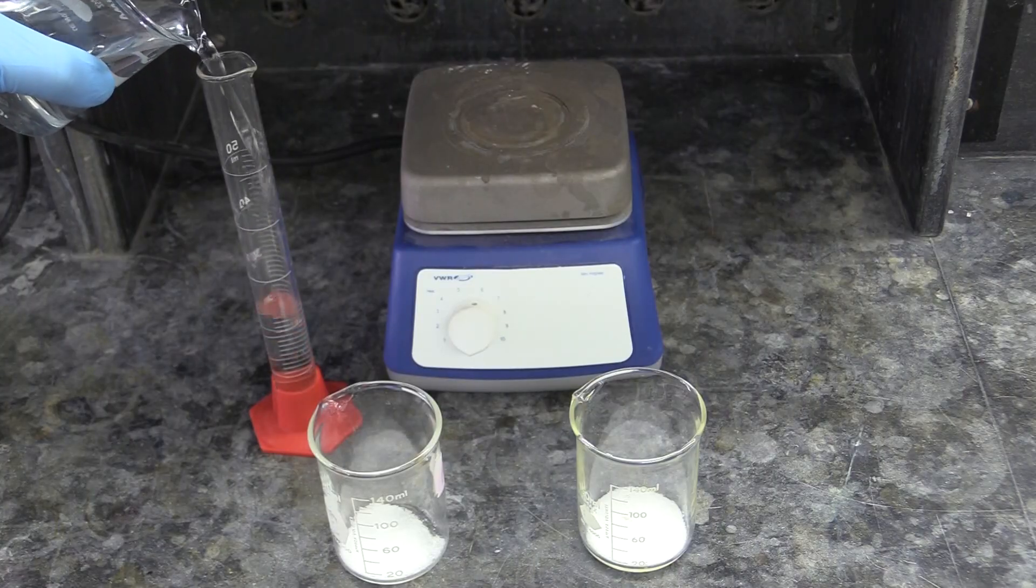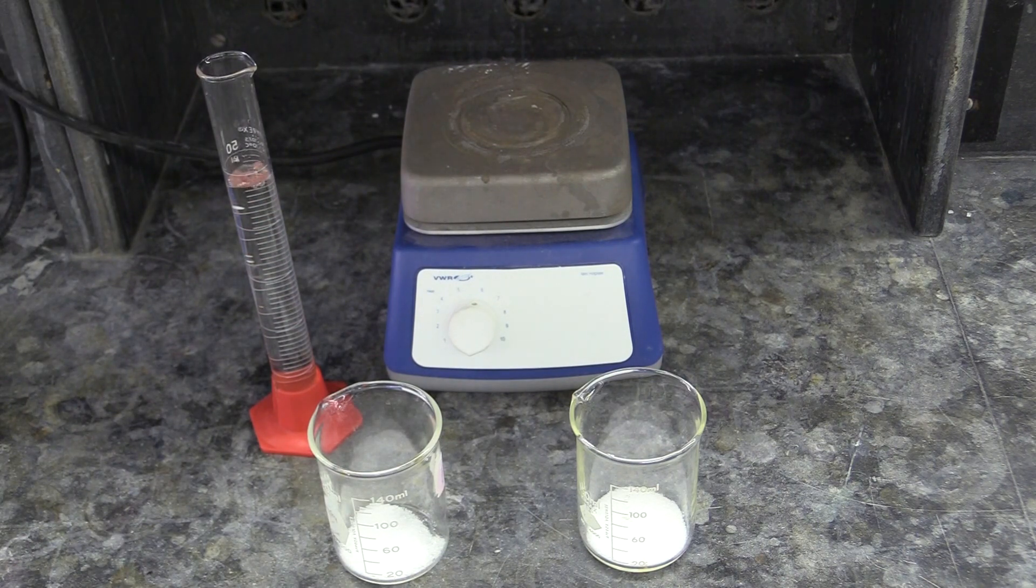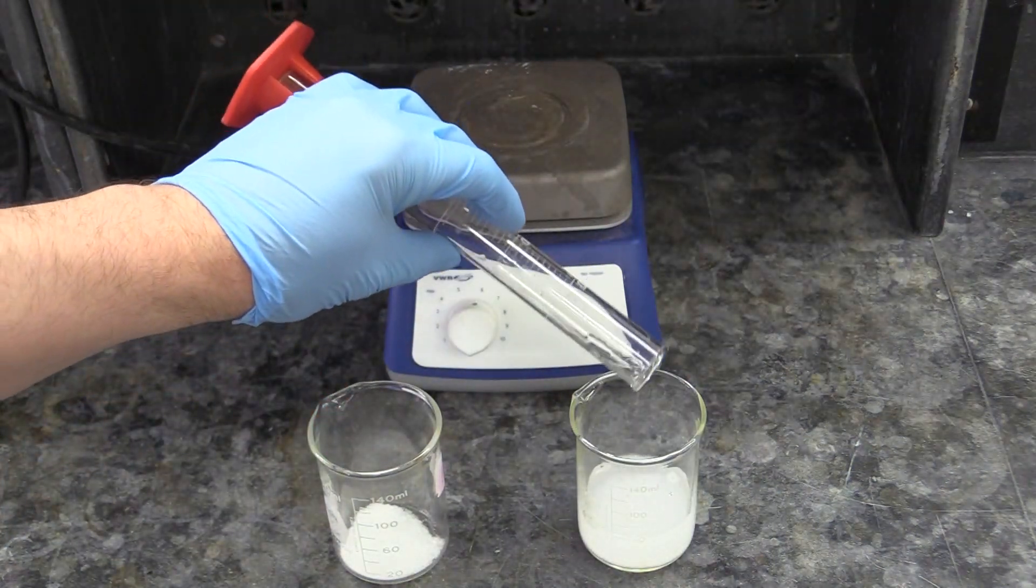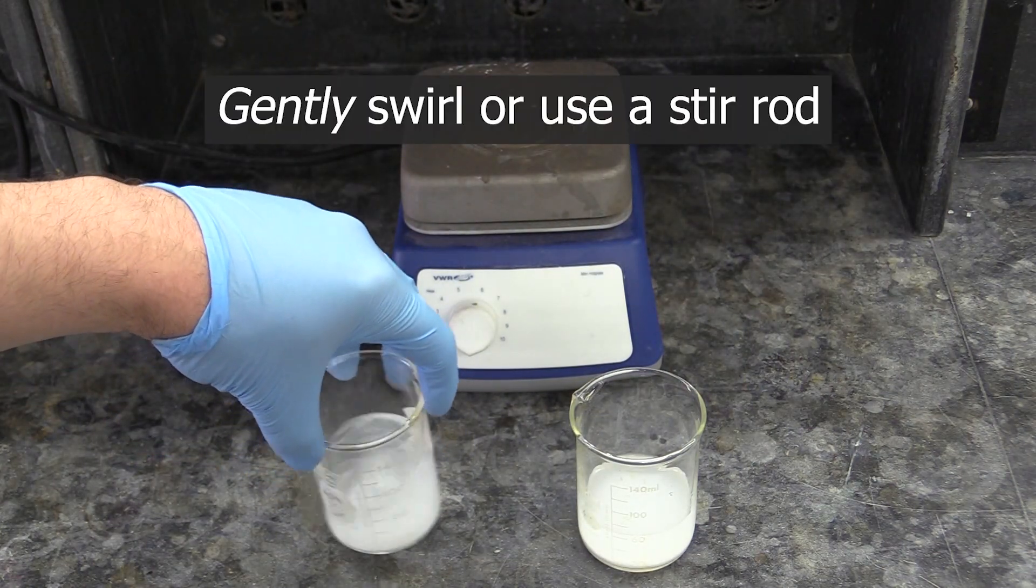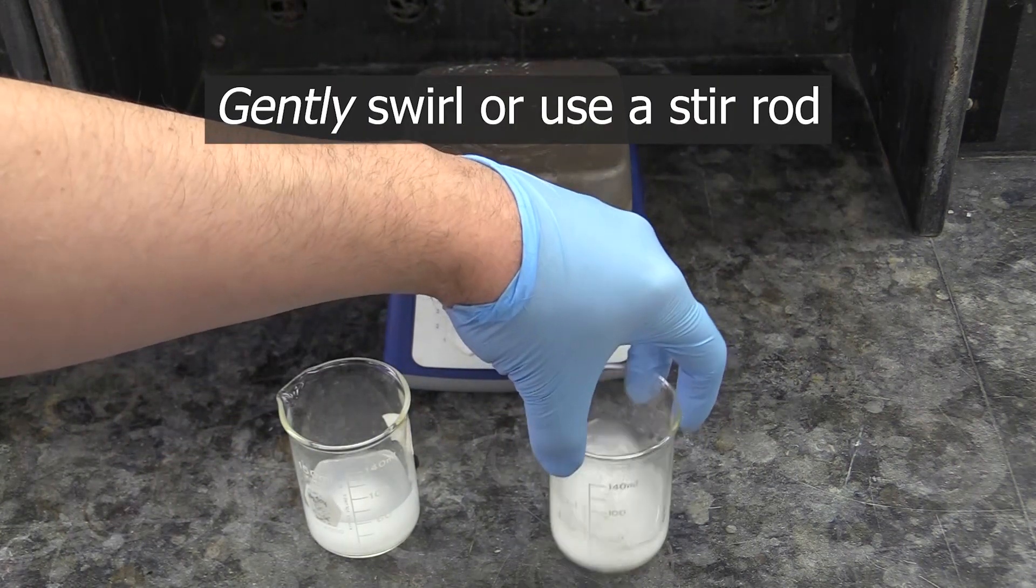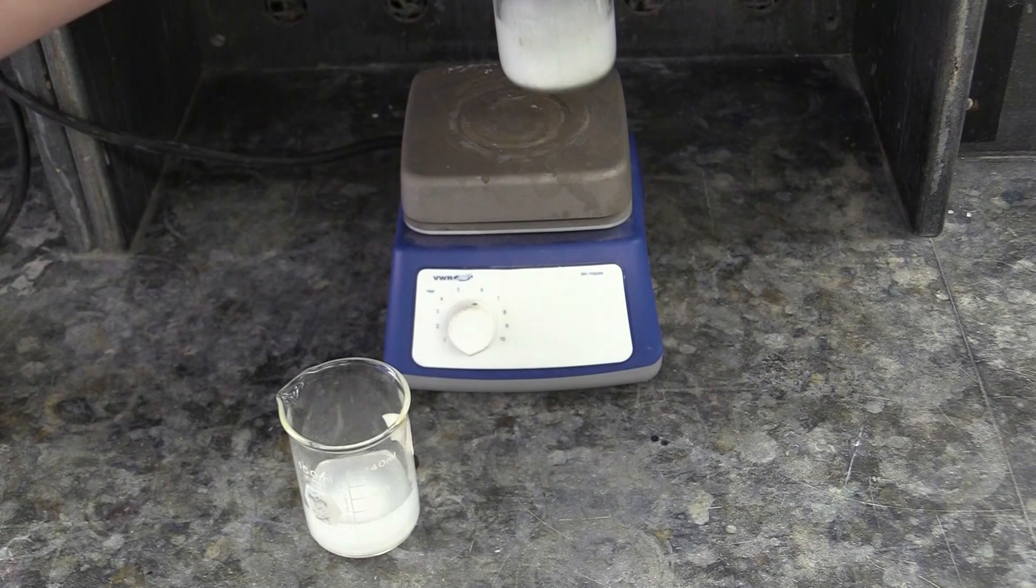The next step is to digest these mixtures in some water. All you have to do for this is add about 50 milliliters of water to both beakers, give them a stir, and heat them on a hot plate for about 3 minutes.